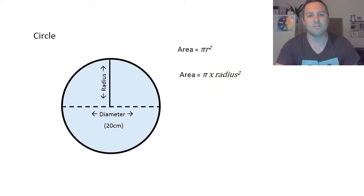Next shape is a circle. Now a circle is quite easy. In this case we're looking at area, so you need to make sure you use the right rule for this one. The area of a circle is pi times r squared.